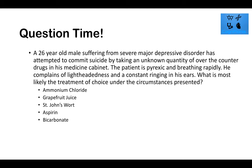Let's review each option. Ammonium chloride acidifies the urine — used for TCA or amphetamine overdose (weak bases). Grapefruit juice inhibits CYP3A4, increasing bioavailability of drugs. St. John's Wort induces CYP3A4, decreasing bioavailability of drugs. These would not be treatment choices here.